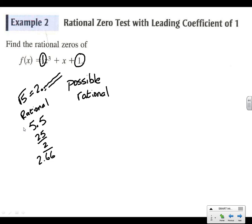On this list, we're going to find our possible rational numbers. We take all the factors of p — the only factors of 1 are 1 and negative 1 — over all the factors of q, which is just 1. So the only possible rational factors are plus or minus 1. A pretty easy one to begin with; we'll get more complicated.